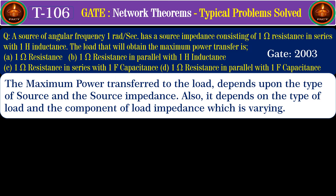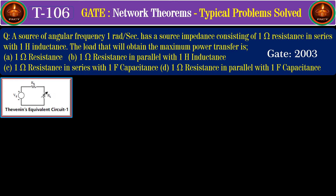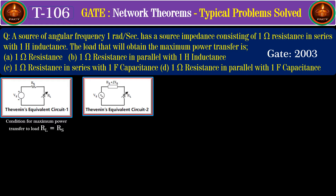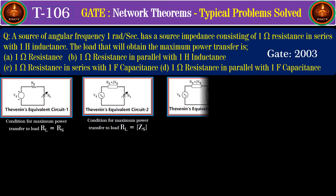The maximum power transfer to the load depends upon the type of source and the source impedance, and also the type of load. If the source is DC, with pure resistance load varying, then the condition for maximum power transfer is RL equals RS. But when the source is AC with complex source impedance and pure resistance load varying, then RL equals the modulus of ZS.